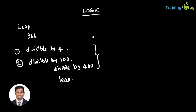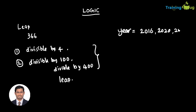First we'll take a year as a variable — this is what we are going to check. According to the Gregorian calendar, nearly every four years it is a leap year. For example, 2016 was a leap year, then 2020, then 2024 — nearly every four years we have a leap year.